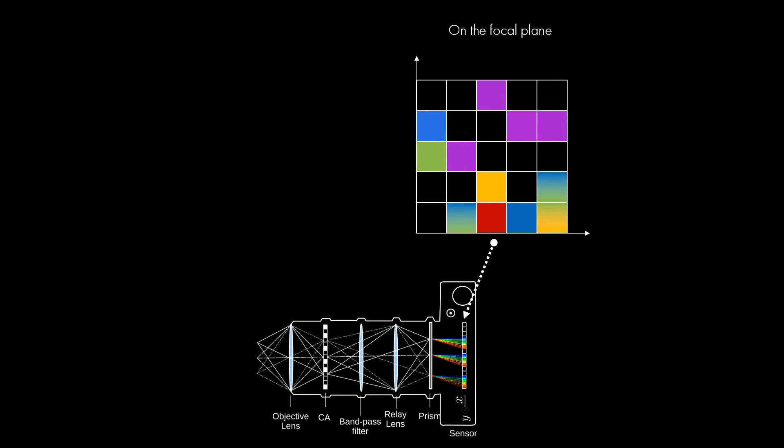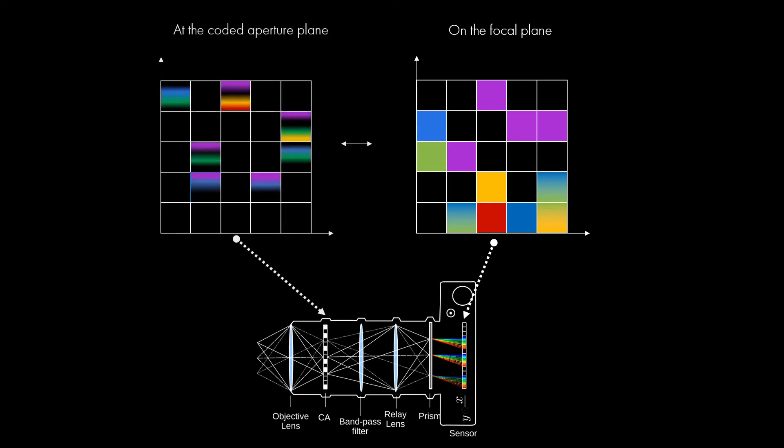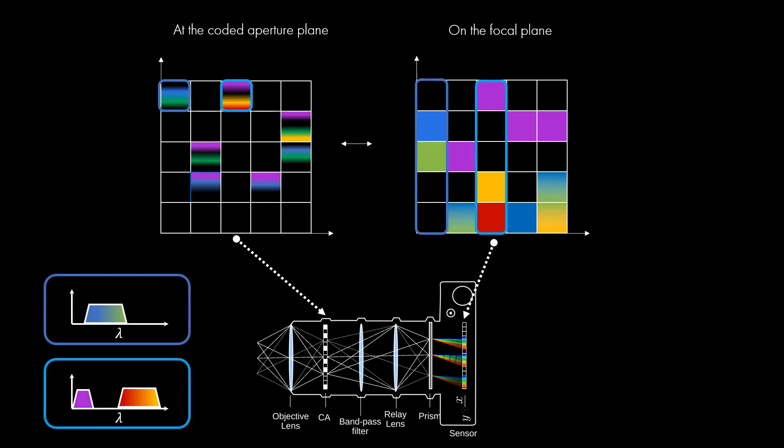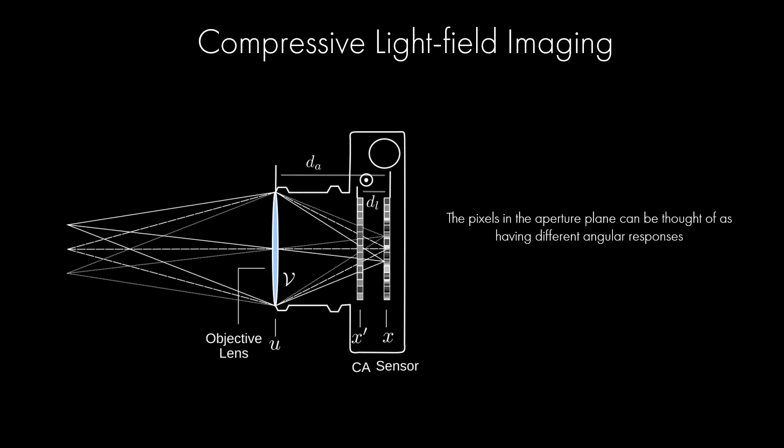Effectively, our TMCA is mathematically equivalent to creating band-pass filters in the coded aperture plane. Those filters are the combination of spectral bands corresponding to the pixels selected by the coded exposure in the focal plane. Similarly, for compressive light field imaging, we let the reader refer to the paper to see how TMCA allows us to think of pixels in the coded aperture plane as becoming angular selective.